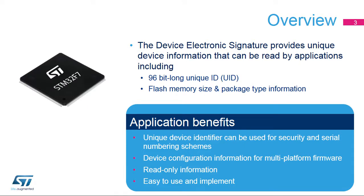The Device Electronic Signature provides a set of registers containing die identification, unique device identifier or UID, and other read-only device information, such as memory size, package type, and device calibration information.